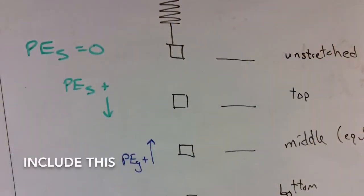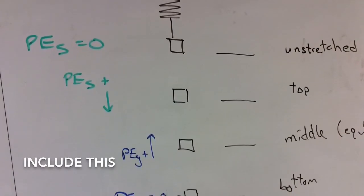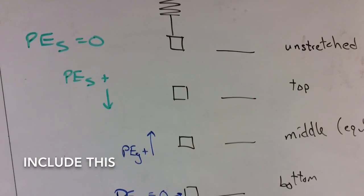One really good way to organize all your data is a chart like this with the unstretched top, middle, and bottom positions.